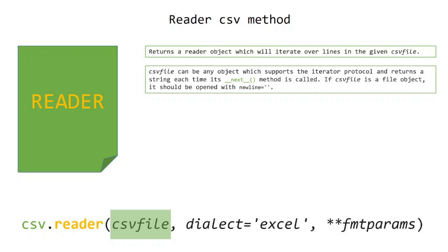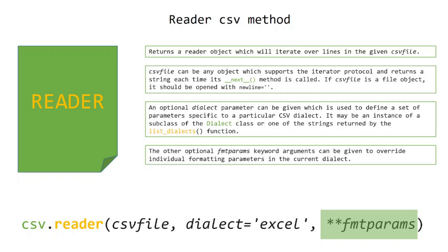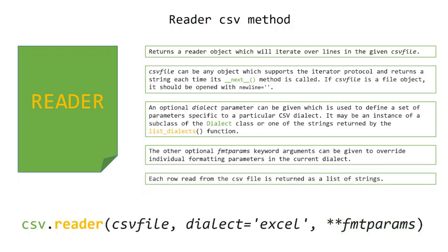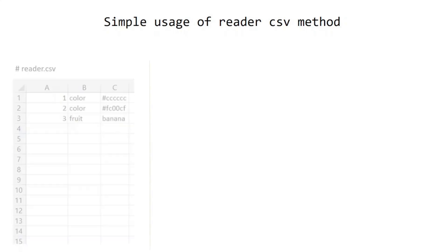If the CSV file is a file object, it should be opened with newline equals empty string. An optional dialect parameter can be given, which is used to define a set of parameters specific to a particular CSV dialect. It may be an instance of a subclass of the dialect class or one of the strings returned by the list_dialects() function. Other optional fmt_params keyword arguments can be given to override individual formatting parameters. Each row read from the CSV file is returned as a list of strings.